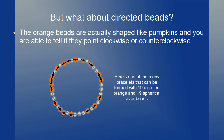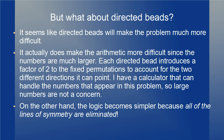Now let's take a look at directed beads. The orange beads are actually shaped like pumpkins, and you're able to tell if they point clockwise or counterclockwise. Here's a diagram of one of the many bracelets that can be formed with 19 silver and 19 directed orange beads — arrows show the way the orange beads are pointing. Directed beads make the arithmetic harder since the numbers are bigger. Each directed bead introduces a factor of 2 to the number of fixed arrangements to account for the two different directions the beads can point.